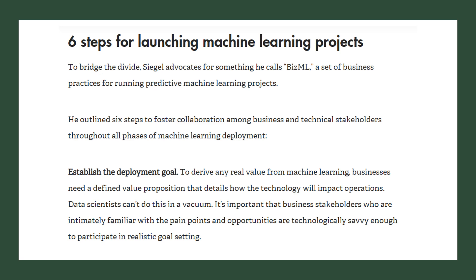He outlines six steps to foster collaboration among business and technical stakeholders throughout all phases of machine learning deployment. The first step is to establish a deployment goal. To derive any real value from machine learning, businesses need a defined value proposition that details how the technology will impact operations. Data science can't do this in a vacuum, so it is important that business stakeholders who are intimately familiar with the pain points and opportunities are technologically savvy enough to participate in realistic goal setting.